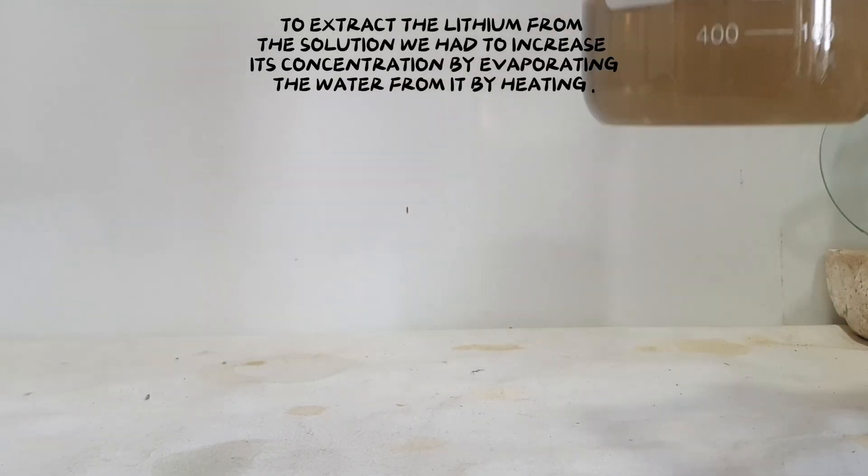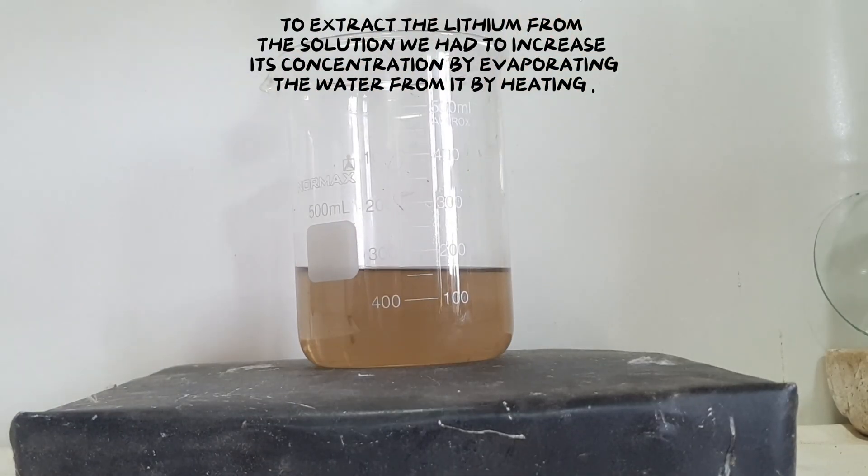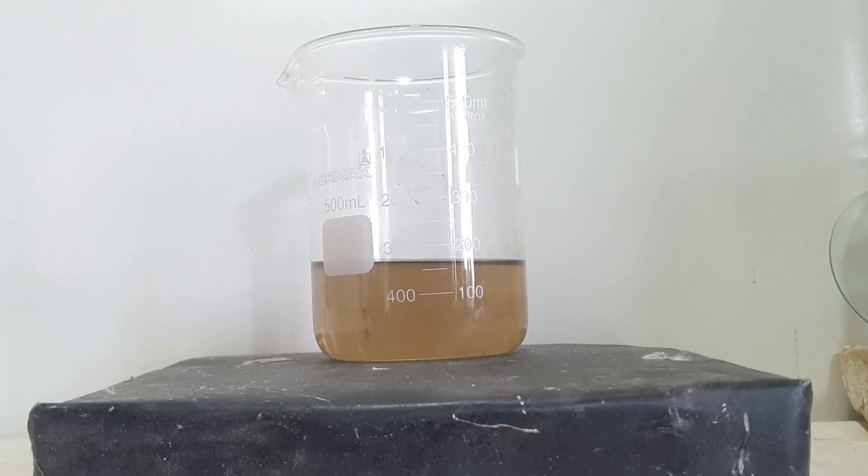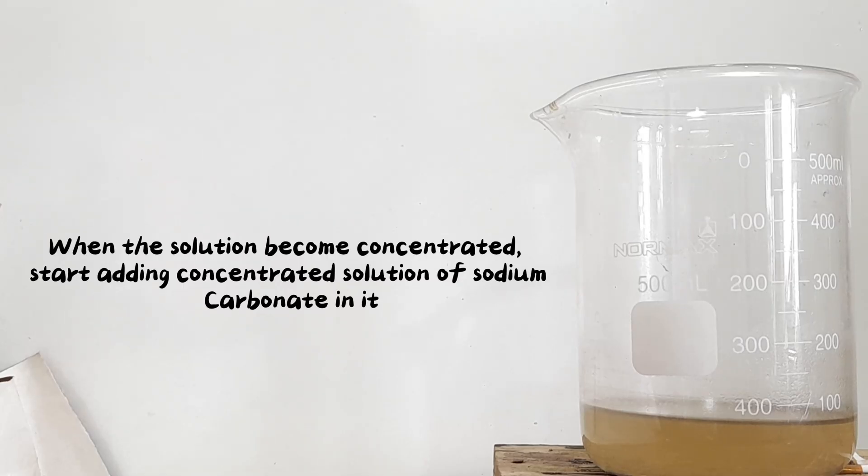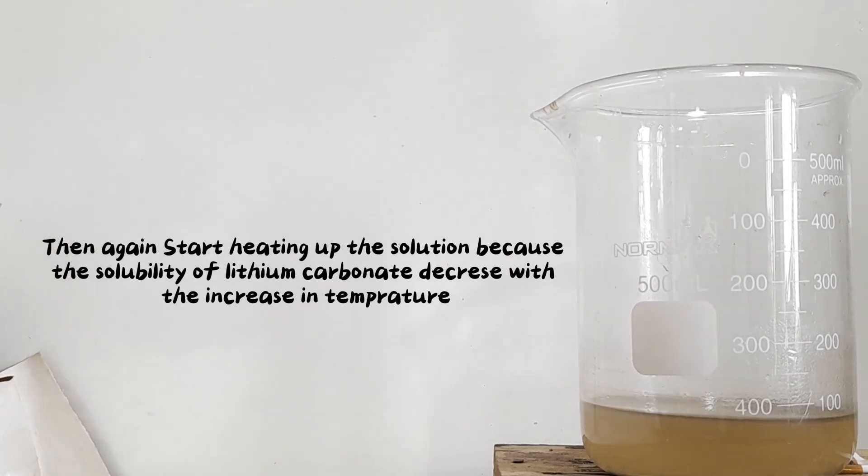To extract the lithium from the solution we had to increase its concentration by evaporating the water from it by heating. When the solution becomes concentrated, start adding concentrated solution of sodium carbonate in it. Then again start heating up the solution because the solubility of lithium carbonate decreases with the increase in temperature.